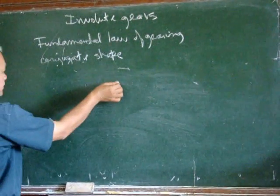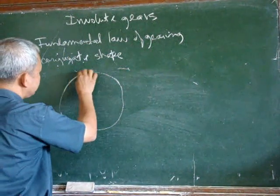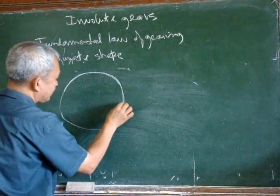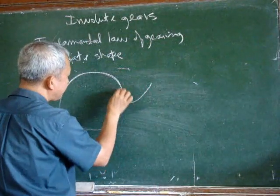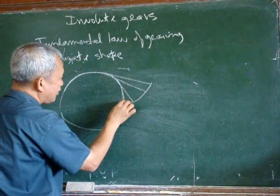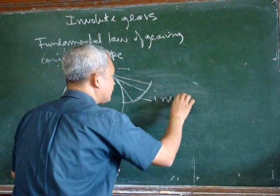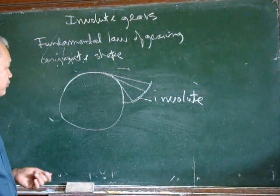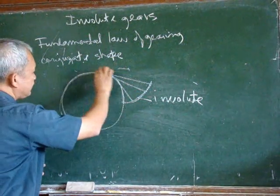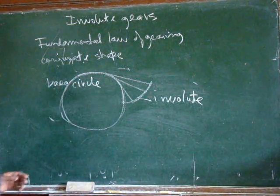Consider this figure: this is a circle and we have an imaginary string around it. When we unwind this, that particular point which is the end of that string will trace a certain curve, which is the shape of one involute. This circle in the nomenclature of involute gearing is called the base circle.